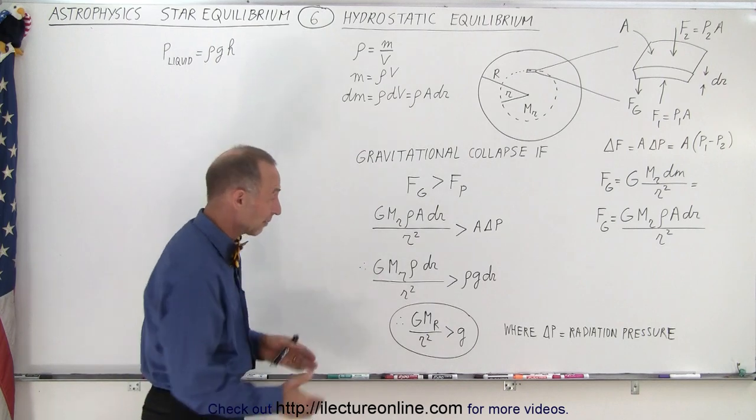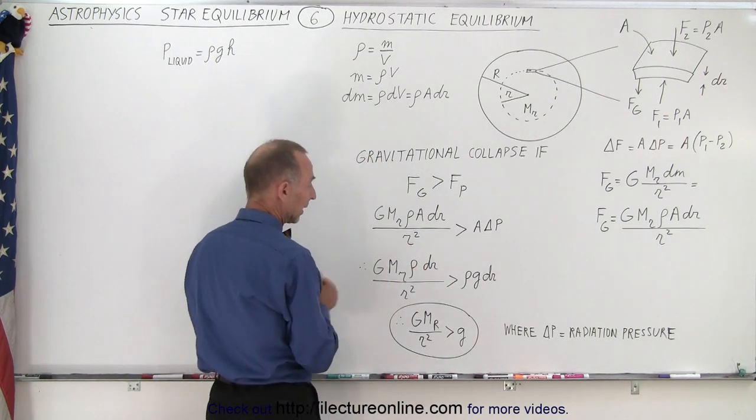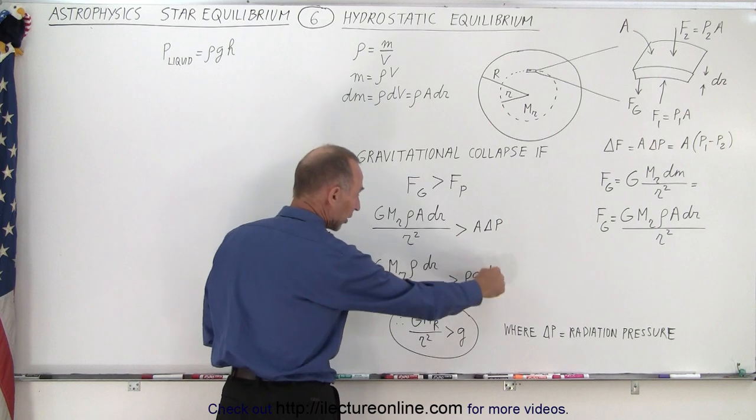And then again, we realize we have a density of rho on both sides. That cancels out. And so essentially, also dr cancels out.